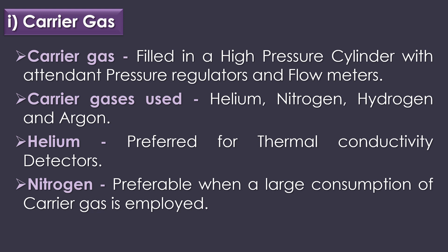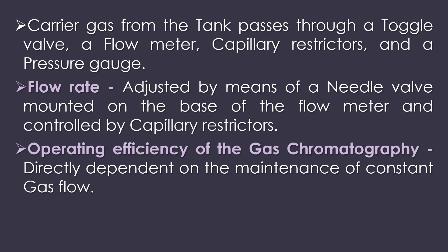The first part of gas chromatography is the carrier gas, which is filled in a high pressure cylinder with pressure regulators and flow meters. Helium, nitrogen, hydrogen, and argon are used as carrier gases. Helium is preferred for thermal conductivity detectors because of its high thermal conductivity relative to most organic vapors. Nitrogen is preferable when large consumption of carrier gas is employed. The carrier gas passes through a toggle valve, flow meter, capillary restrictors, and a pressure gauge. The flow rate is adjusted by a needle valve and controlled by capillary restrictors; operating efficiency is directly dependent on maintaining constant gas flow.